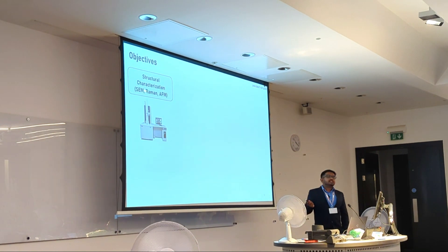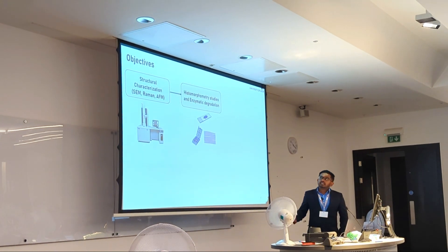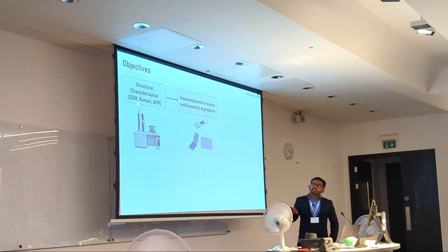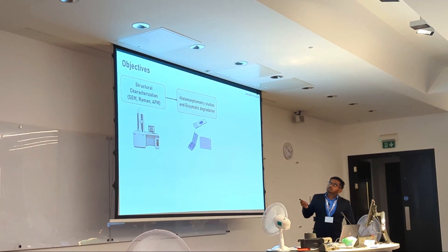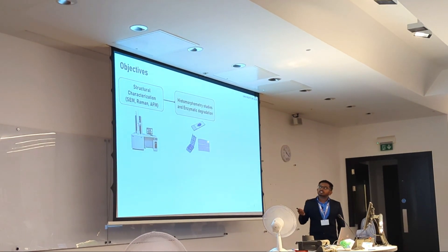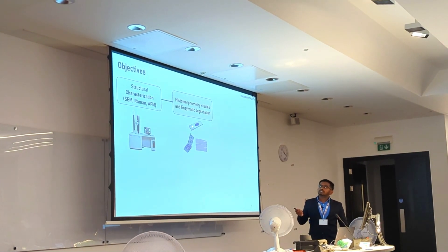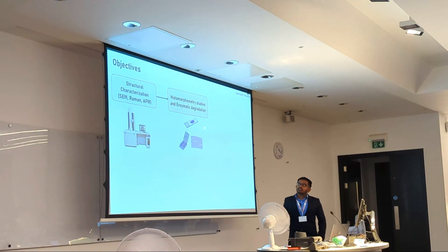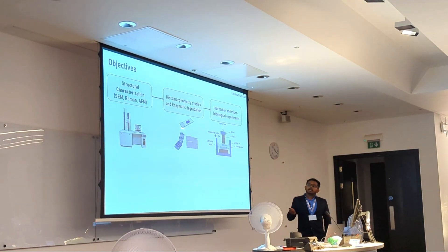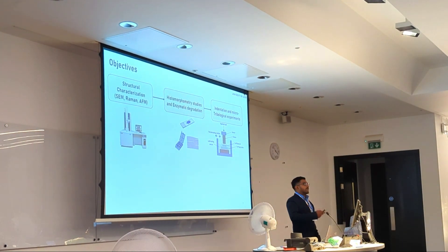The first objective is to understand cartilage structure through structural characterization, both qualitatively and quantitatively. For qualitative techniques we are using SEM, and for quantitative techniques we are using Raman spectroscopy. In this presentation I'll be showing only SEM and Raman, not AFM. These characterization results will then be validated with histomorphometric studies.